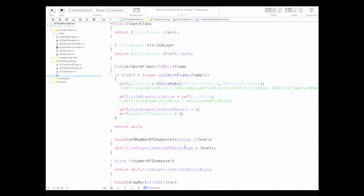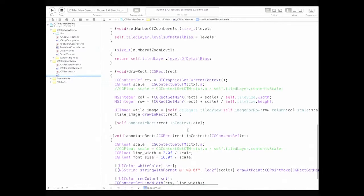The tiled layer, ignore that, it's just a CATiledLayer. It's got one method overwritten. Tiled layer that saves me casting that method every time. And this is what we do. We set the default tile size and set that on our tiled layer. Tiled layer is just self layer. We set levels of detail one. So we're going to have one level of detail. And we set number of zoom levels, which just proxies level of detail bias to three. So we've got three levels of zoom, one level of detail. That's what I'm telling it to do.